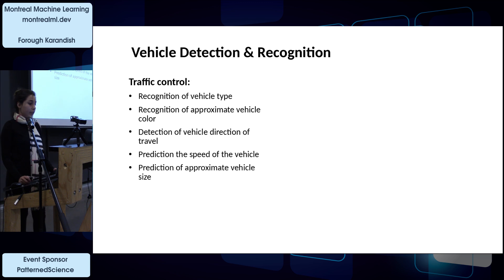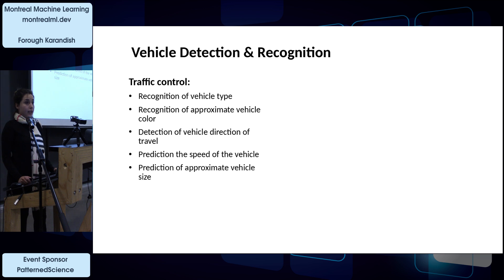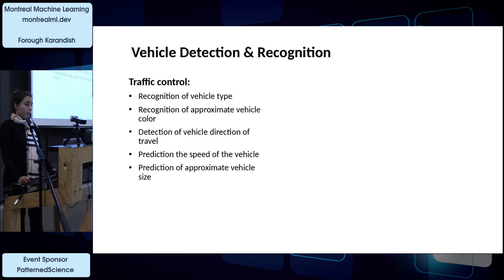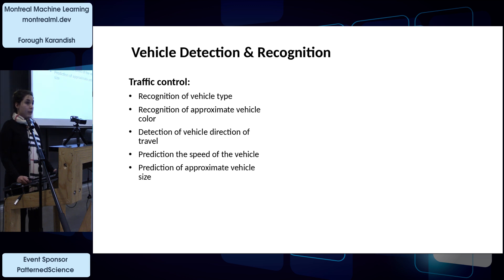Vehicle detection and recognition is used for traffic control, recognition of vehicle type—whether it's a Mercedes-Benz, Toyota, or other—recognition of approximate vehicle color, detection of vehicle direction of travel to find which way has more traffic, prediction of vehicle speed, and prediction of approximate vehicle size.